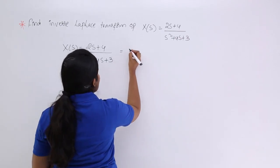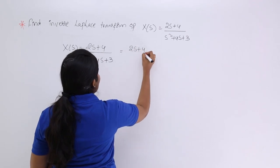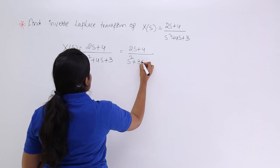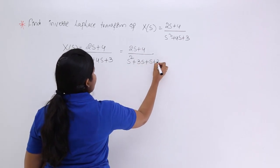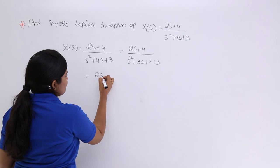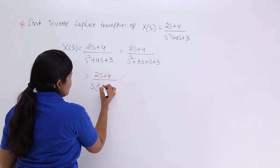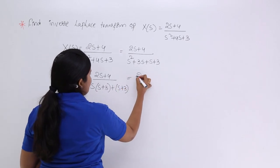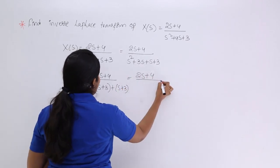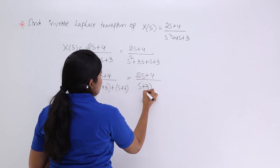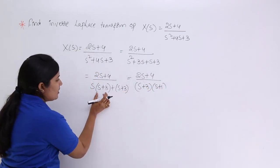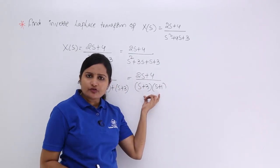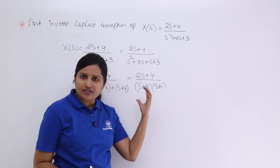So now I am writing this equation as (2s + 4) / (s² + 3s + s + 3), which equals (2s + 4) / (s(s + 3) + 1(s + 3)). Taking (s + 3) as common gives (2s + 4) / ((s + 3)(s + 1)). So the denominator is now separated into factors (s + 3) and (s + 1).